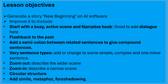Lesson objectives: Generate a story about a new beginning on AI software. Improve it to include: start with a busy, active scene and a narrative hook — it's good to add dialogue here. Flashback to the past. Add a semicolon between related sentences to give compound sentences. Vary sentence types — add or change to some simple, complex, and one minor sentence. Zoom out to describe a wider scene. Zoom in to describe a narrow scene. Make it a circular structure and add simile, metaphor and foreshadowing.